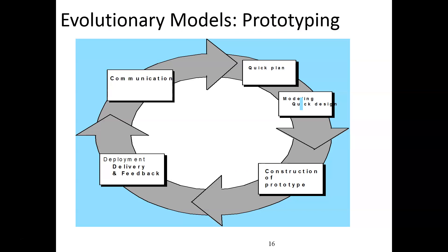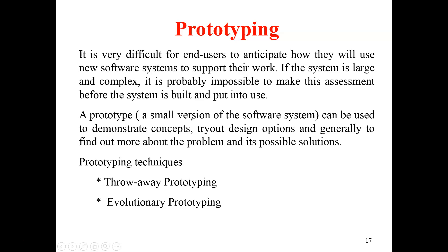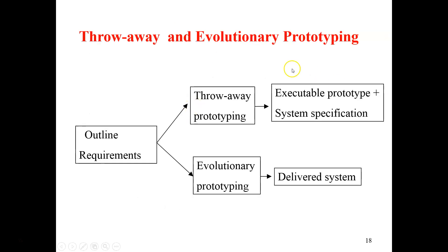The next model is prototyping. Today prototyping is used to gather requirements. These are the phases of prototyping: quick plan, modeling and quick design, construction of prototype, deployment, delivery, feedback, and communication. A prototype is a small version of a system used to demonstrate the concepts of what you are going to develop. You demonstrate it to the customer, get feedback, and modify accordingly.